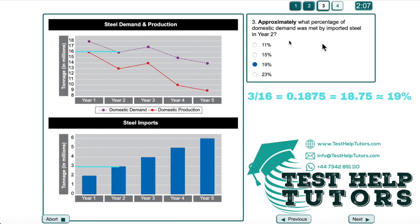I hope you've had a go. Approximately what percentage of domestic demand was met by imported steel in year 2? In year 2 we can see that the demand was 16 million and the imports was 3 million.